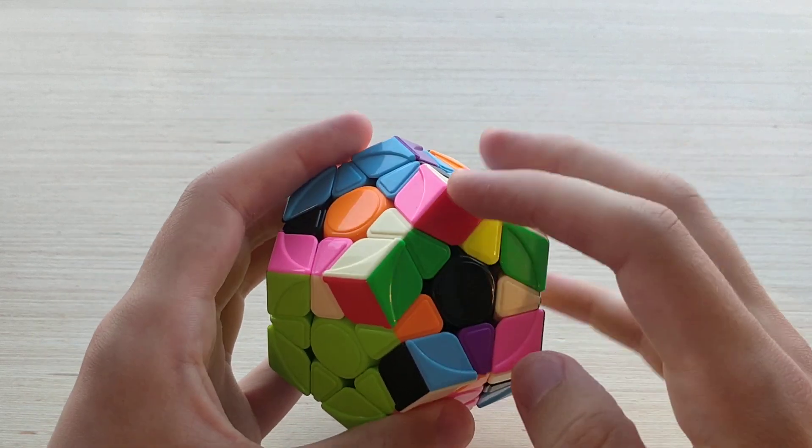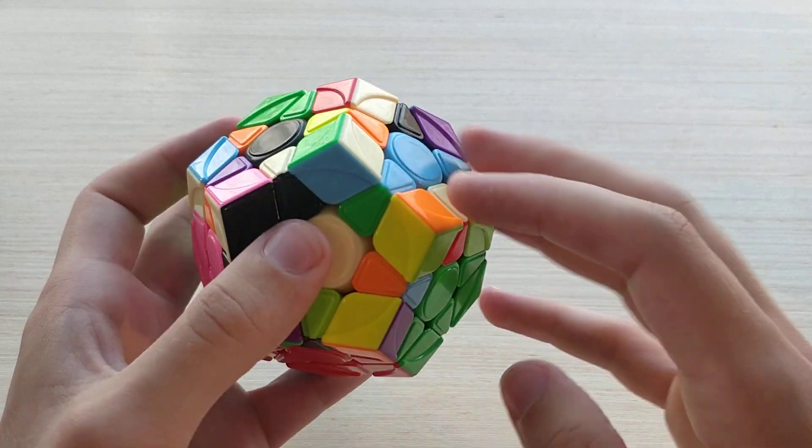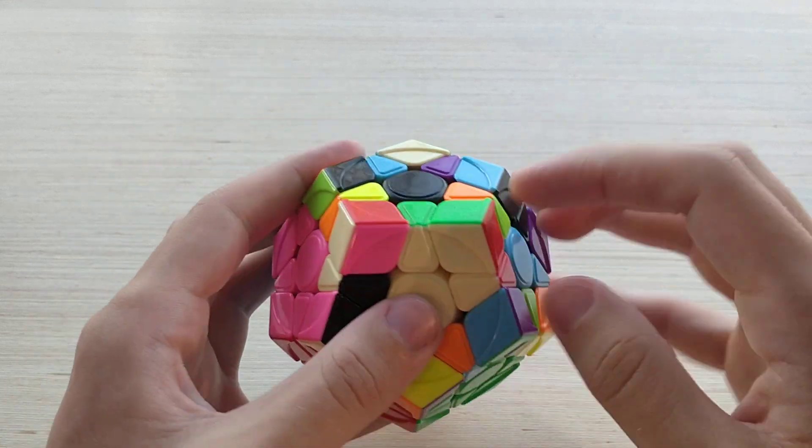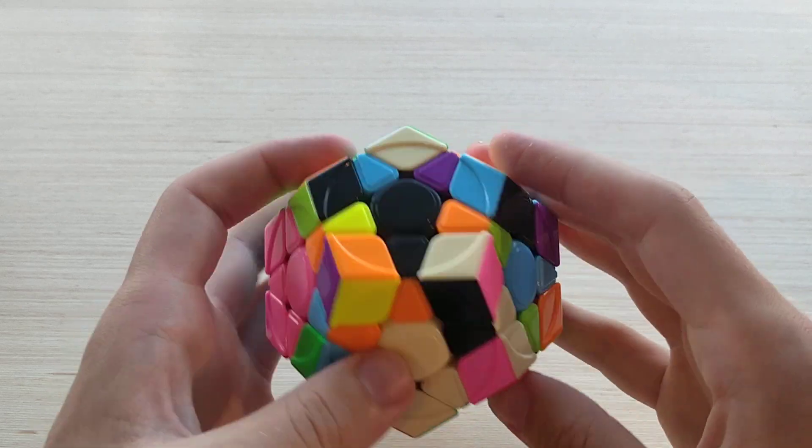Now the green-cream pieces got paired up together, so the matching edge is down here. I'll pair them up like that and insert.